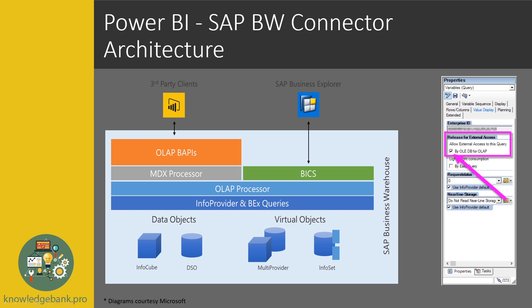One thing to note: if you're using the BW connector and some objects don't show up in the Power BI navigation, make sure 'allow external access to this query' is enabled. Once you do that, you can get access. These screenshots are taken from the official Microsoft white paper, which is pretty detailed — if you want more information, look up the SAP BW white paper for Power BI.